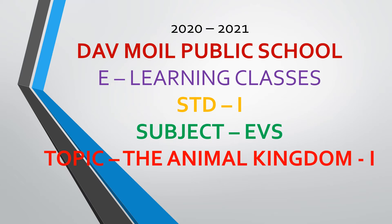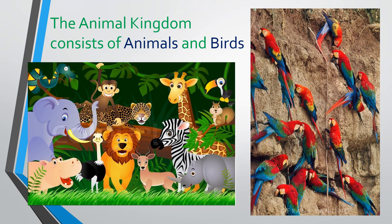Hello students of Standard First, welcome to the e-learning classes of D.A.V. Moyle Public School, subject EBS. Our today's topic is the Animal Kingdom, part 1. The Animal Kingdom consists of animals and birds. Let us discuss about animals in some details.